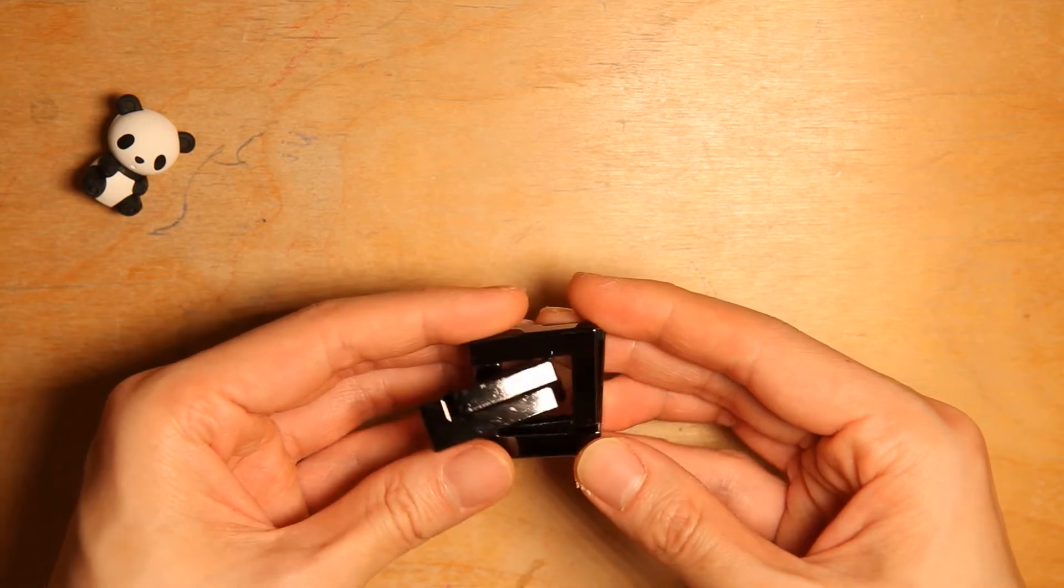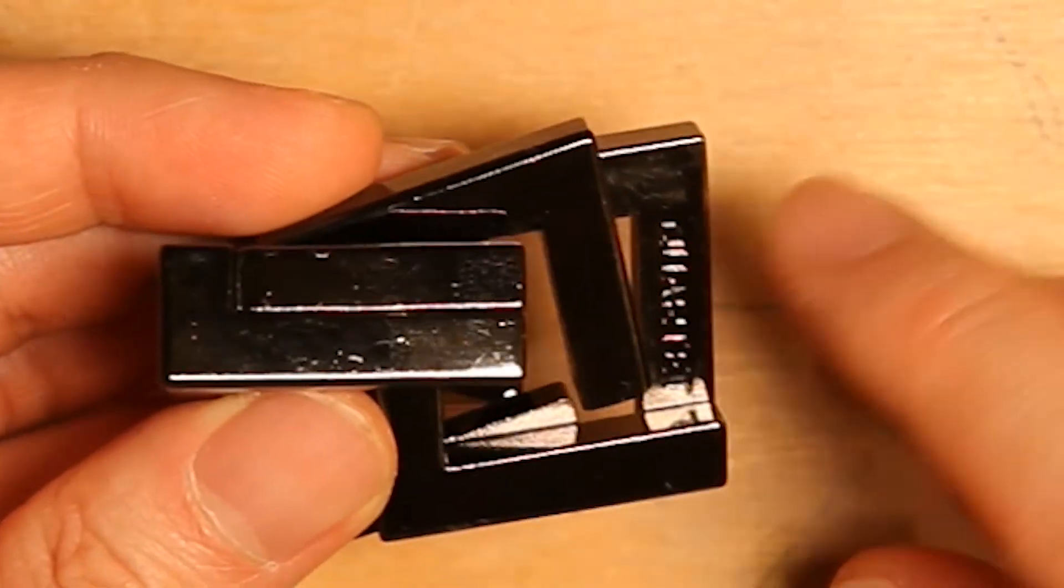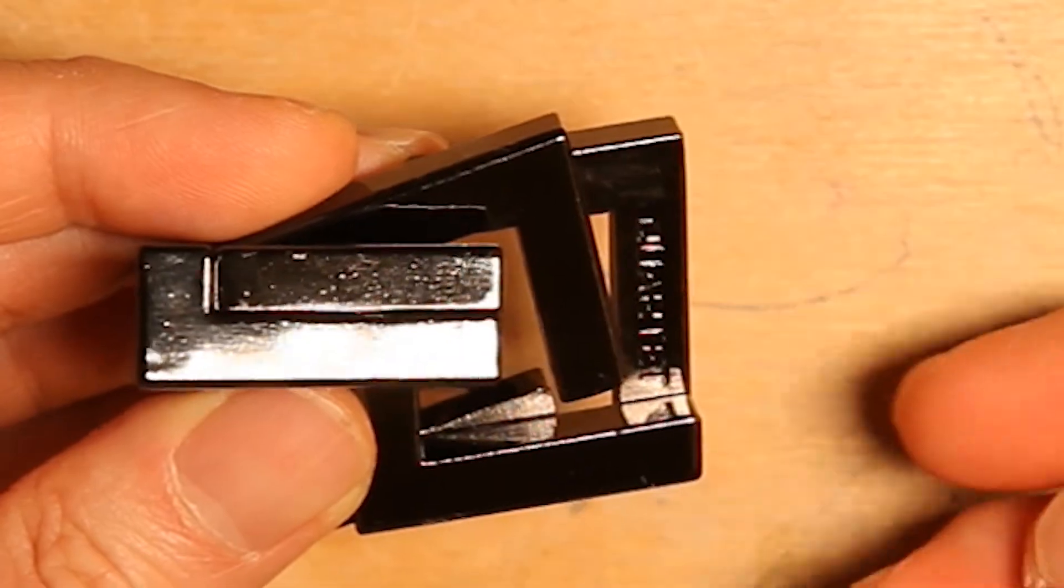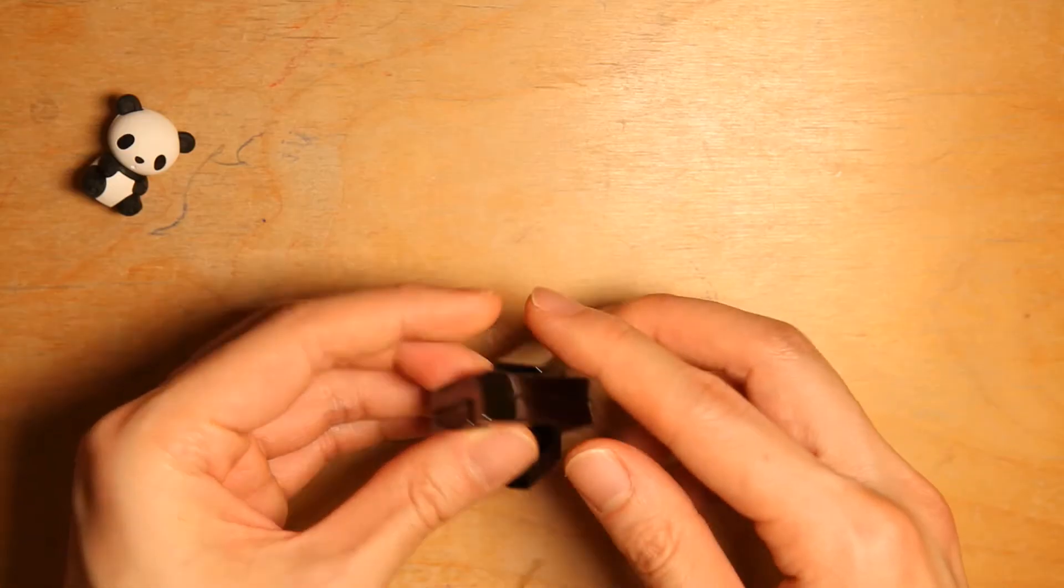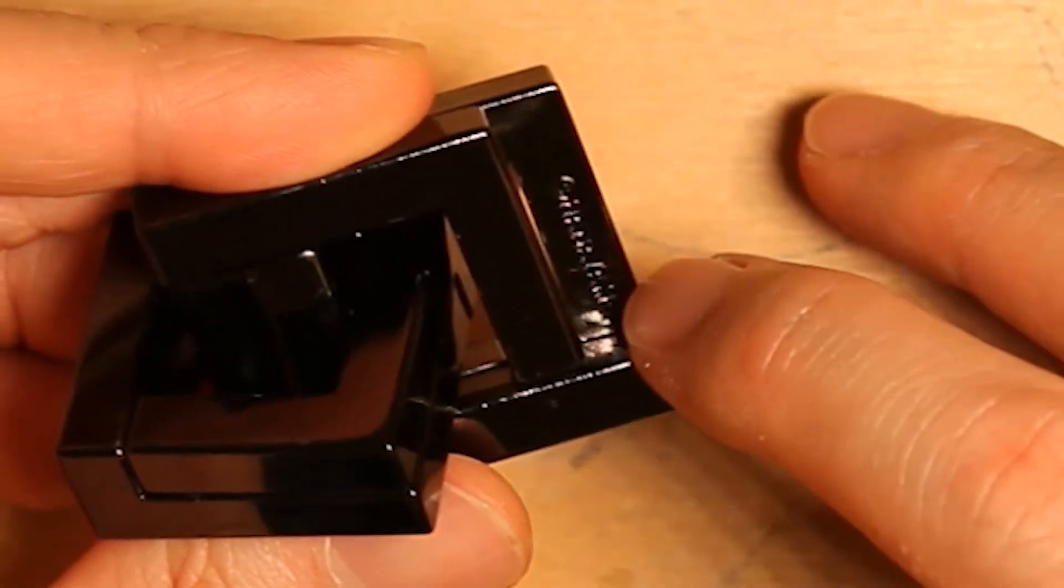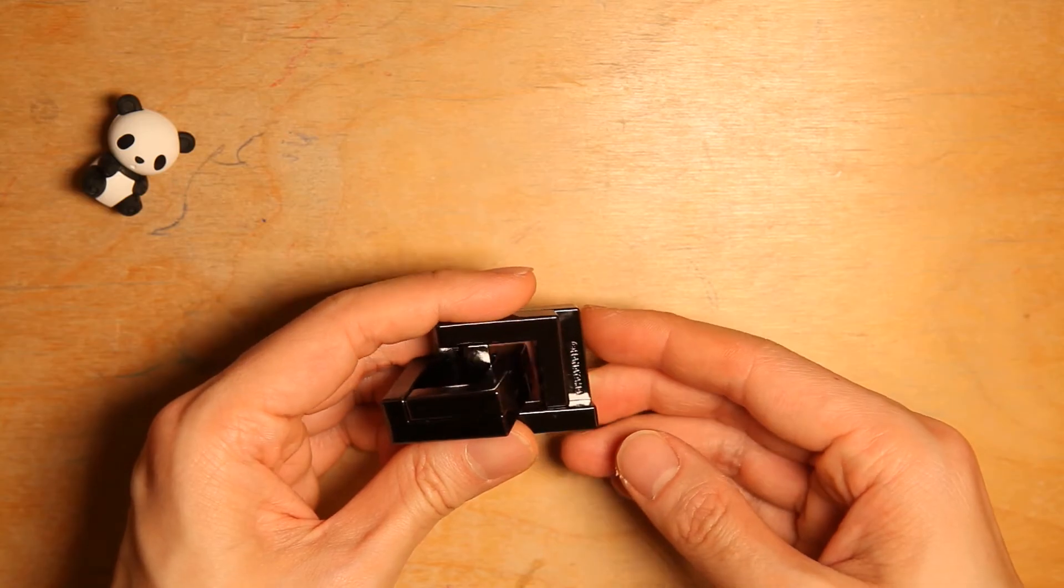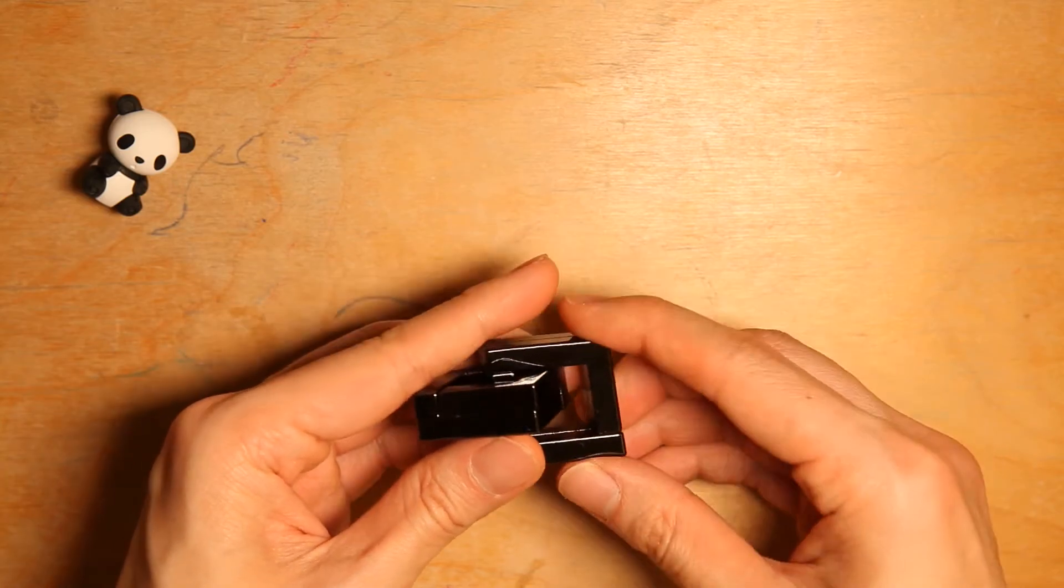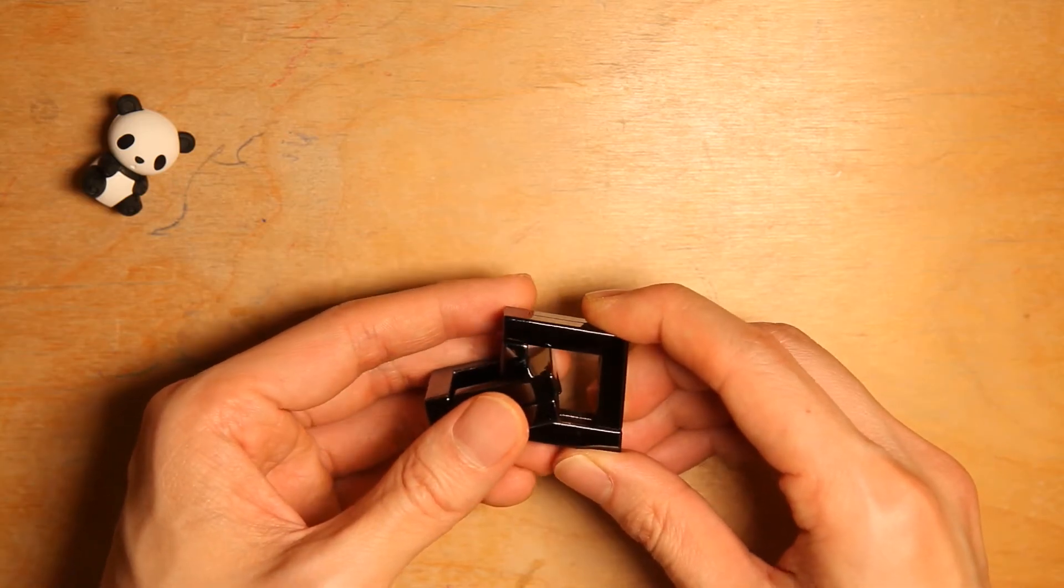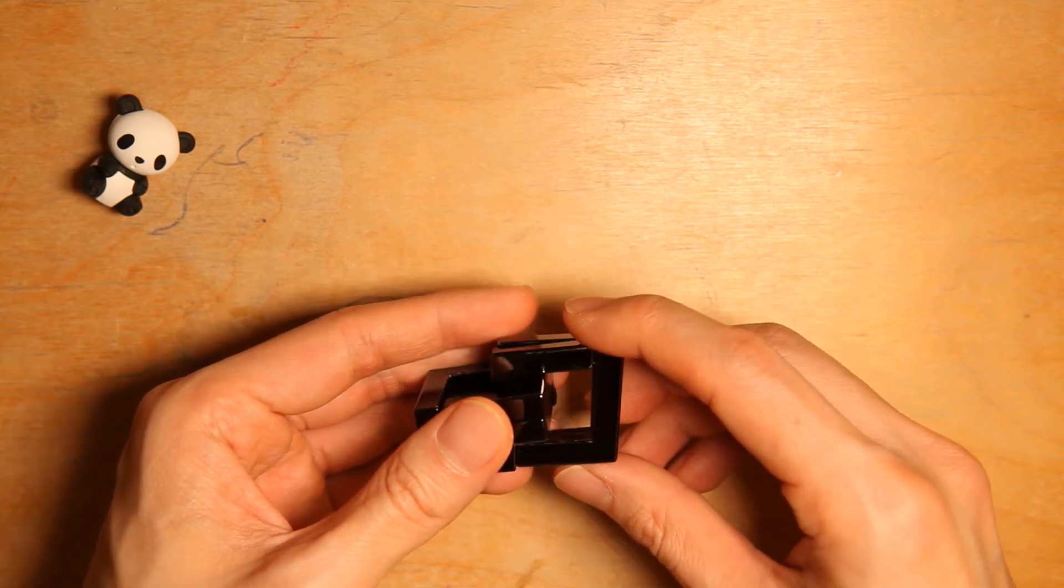To make it easier to identify which piece is which, as you can see here, this is the Quartet piece I'll call it, and the other pair is the Hanayama piece. The Hanayama brand is here. For this puzzle, we will put the Hanayama piece pair stationary in the middle at the start.